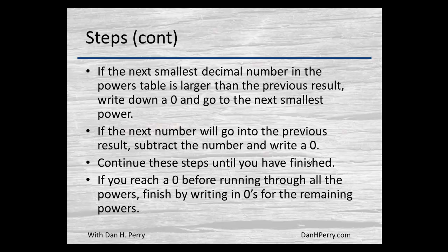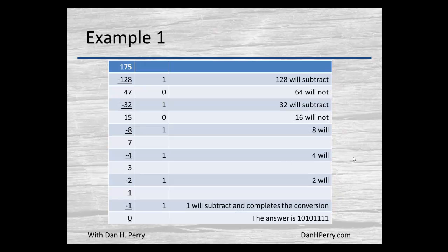For this example, we start with the number 175. Looking at our powers of 2, 128 will go into it, so we bring down a 1 and subtract 128, leaving us 47. The 64 won't go into 47, so we bring down a 0. The next smaller power, 32, will go into 47, so we bring down a 1 and subtract 32, giving us 15. The 16 won't go into 15, so we get a 0.